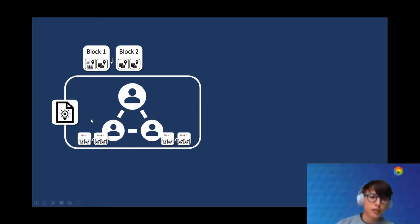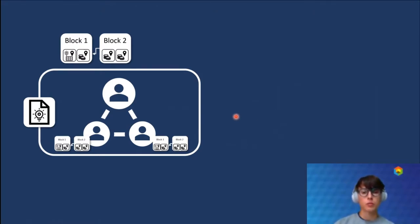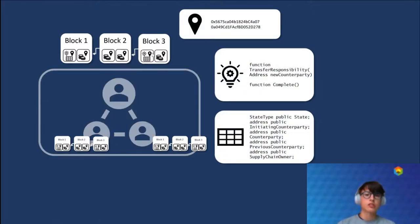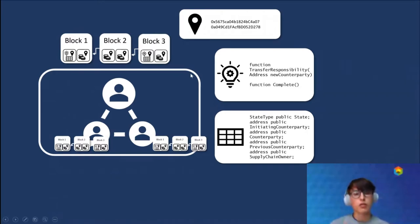Once the smart contract is sent to the blockchain, the nodes — just like when you send a transaction for cryptocurrency — store the smart contract into a transaction. They create a new block on the blockchain once enough transactions are there, and right here we can see that there's the new contract.